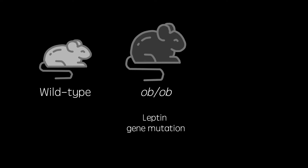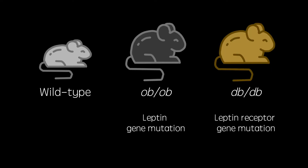The second mouse model of obese mice is the DB-DB mouse. DB is the gene which codes for the leptin receptor. These mice have homozygous mutations in the DB gene, which means their leptin has no effect, their appetite increases and they become obese.